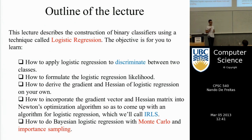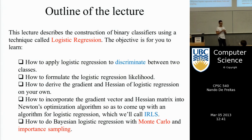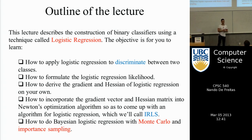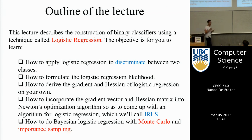It's not analytic in the sense that you can't find the solution for the optimum, unlike linear regression. But the gradient and the Hessian are analytic, and moreover the cost function you're optimizing is convex, so you're guaranteed to find a minimum — provided you implement your algorithm correctly. That will be the frequentist approach to learning the parameters. The frequentist approach believes there is one true value of the parameters, and we will try to find that single value during optimization.